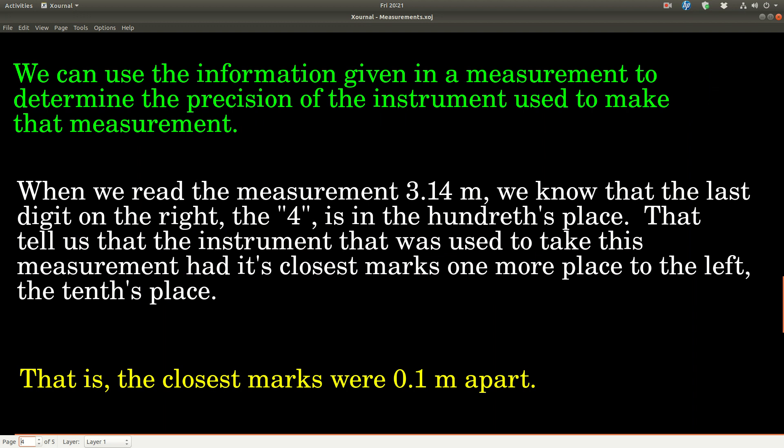That useful information is that anybody who reads that measurement can figure out how precise the instrument you used to make that measurement was. With 11.2 milliliters, they would say the last digit written is the two that's in the tenths place, that means the closest marks must have been one to the left of that or the ones place. For example, let's say we read a measurement that's 3.14 meters. When we read that number we know it came from a measurement, we know the last digit, the four here, was estimated. Because this four is in the hundredths place, we know the closest marks on that meter stick must have been one to the left or the tenths place, or that is, the closest marks were 0.1 or a tenth of a meter apart. So that tells us the precision of the instrument used.